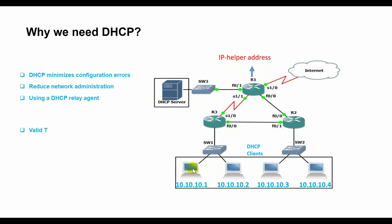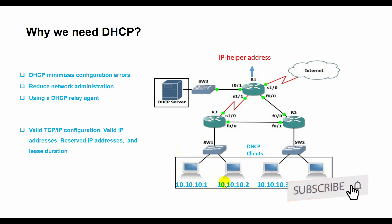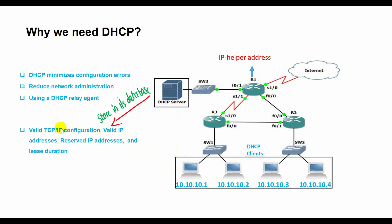The DHCP server stores configuration information in a database, including valid TCP/IP configurations for all clients on the network, valid IP addresses as well as excluded addresses, reserved IP addresses associated with particular DHCP clients, and the lease duration — the length of time for which an IP address can be used before a lease renewal is required.